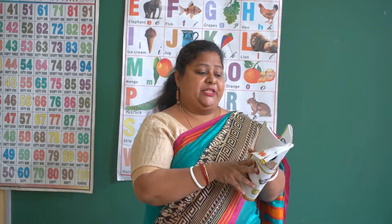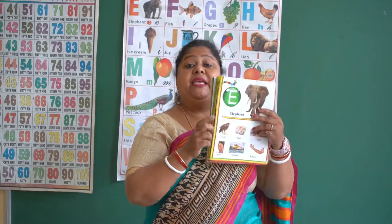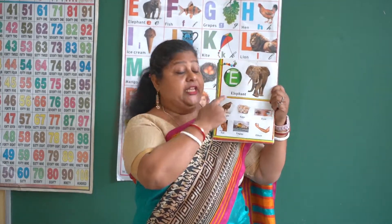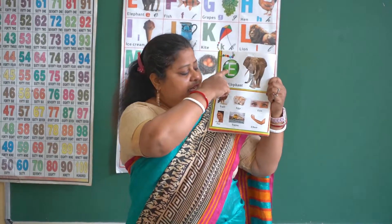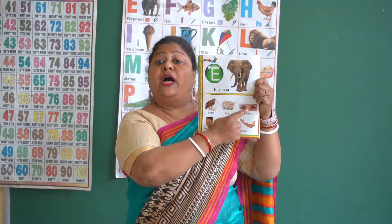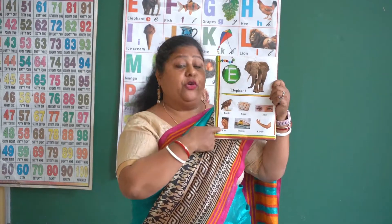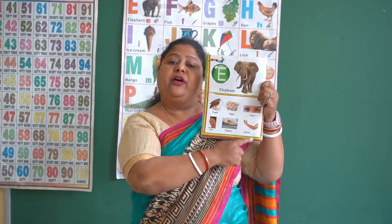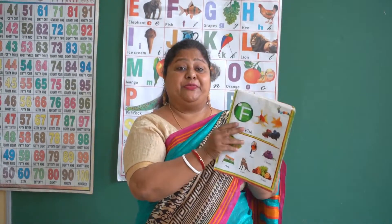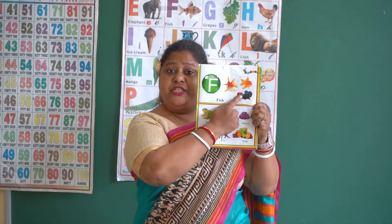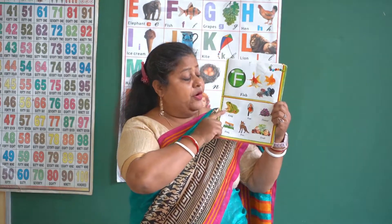Next page — E for elephant, E for eagle, E for eggs, E for eyes, E for ear, E for engine, E for elbow. Next page — F for fish, F for frog...